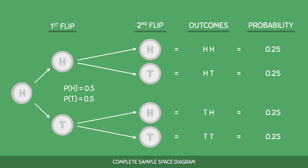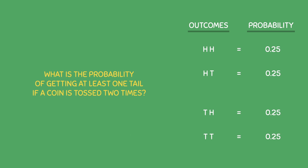A common exam question might be: what is the probability of getting at least one tail if a coin is tossed two times? The first step is to calculate the probabilities of each outcome, which we have done already. The next step is to look at your outcomes and highlight the ones that have at least one tail or two tails. Now all we have to do is add up the highlighted probabilities to get the answer, and when we do, we get an answer of 0.75.